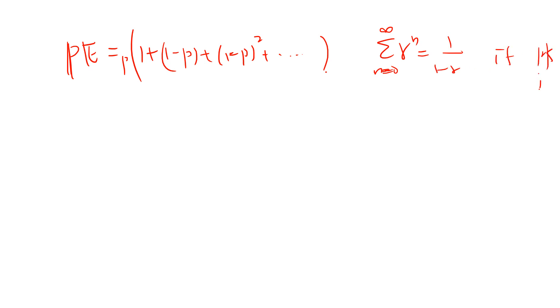We have pE equals p times 1/(1-(1-p)), so pE equals p/(1-(1-p)) = 1. Therefore, the expectation value E is just 1/p.